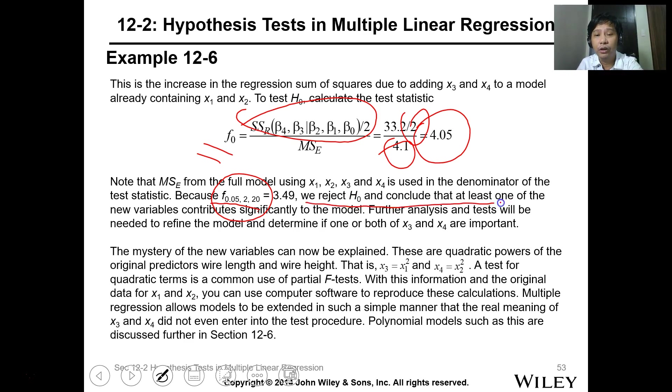The p-value is less than the critical p-value, so we reject H0 and conclude that at least one of the new variables contributes significantly to the model. Further analysis and tests will be needed to refine the model and determine if one or both of x3 and x4 are important.